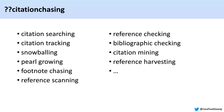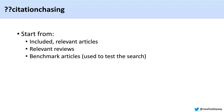Citation chasing has a number of different synonyms, some of them shown here. Sometimes these synonyms refer specifically to backward or forward citation chasing independently, but they all roughly refer to using citation networks to find articles rather than search words. We can start from various different points: included relevant studies, identified relevant reviews, or a benchmark set of articles assembled to test our search string.